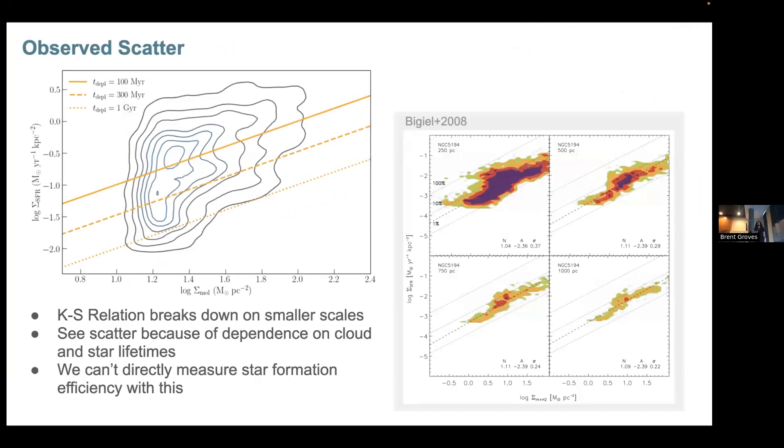The previous plot showed the Schmidt-Kennicutt relation for each of the objects integrated over the total area. But if we zoom in on one of the objects alone and plot the same values pixel by pixel, we see that there's a large amount of scatter in the values spanning a wide range in depletion times.